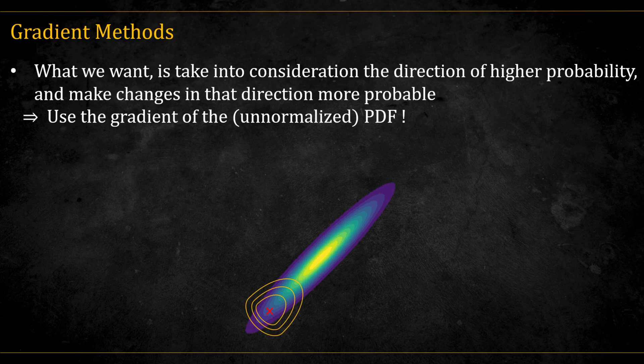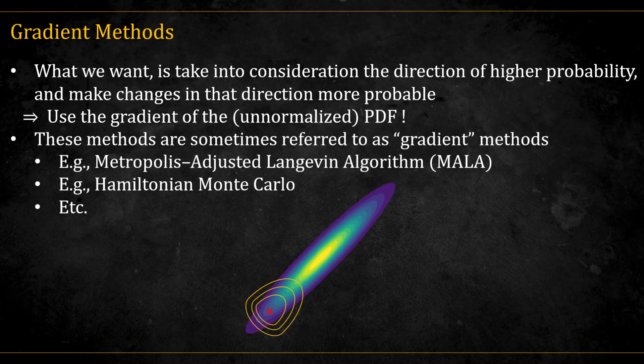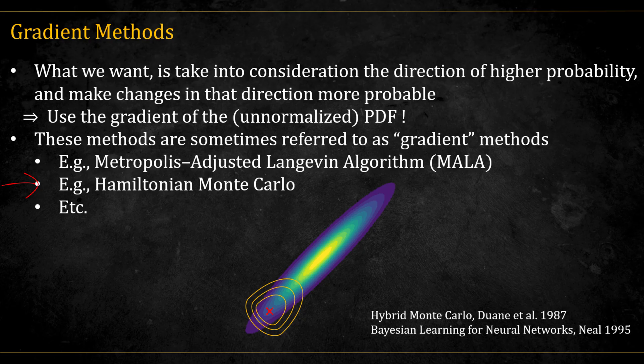What we would want is to somehow take the shape of the target distribution into consideration when proposing new steps. The way to do that is by using the gradient of the unnormalized target PDF. And so this is the reason why these methods are sometimes referred to as gradient methods. There are a few gradient methods, but we'll focus on one called Hamiltonian Monte Carlo, which is mainly based on these two papers. Hamiltonian Monte Carlo not only incorporates gradient information, but also allows us to traverse the distribution quickly, as we shall see now.